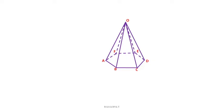For example, we have chosen a hexagonal pyramid for discussion, because the base is a hexagon plane surface. The point O is the apex or vertex. All the corners of this hexagon are connected by slant edges. OA is one slant edge. Similarly, OB, OC, OD, OE, and OF are the slant edges of the pyramid.